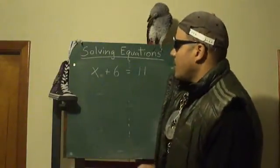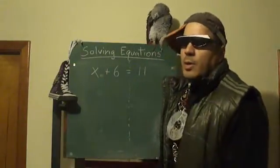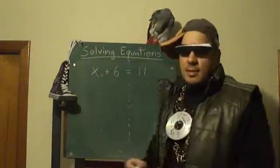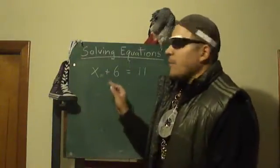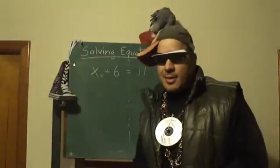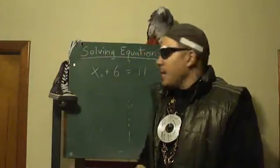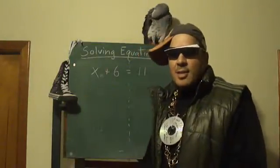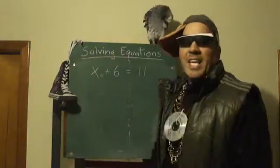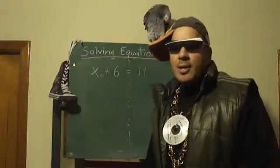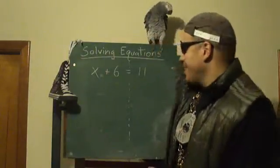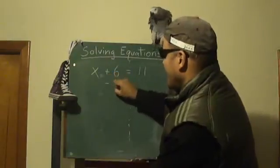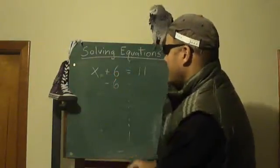So if we want to figure out what x is, we want to get x all by itself on the left side of that equal sign. What's there that we don't want? We don't want the 6 — we don't want to know what x plus 6 is, we want to know what x is. So let's get rid of that 6.